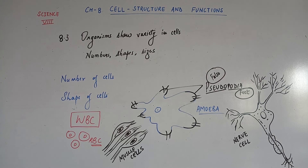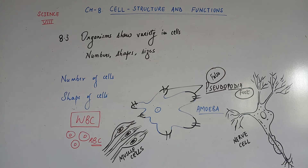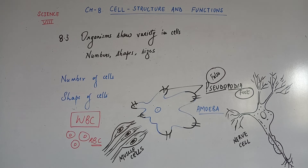Bacterial cells also have a cell wall. All cells are enclosed in a membrane called the plasma membrane, which is present in both plant cells and animal cells. But plant cells and bacterial cells are also covered by a cell wall on the outside. The cell wall gives plant cells their shape and also provides rigidity, making them strong.